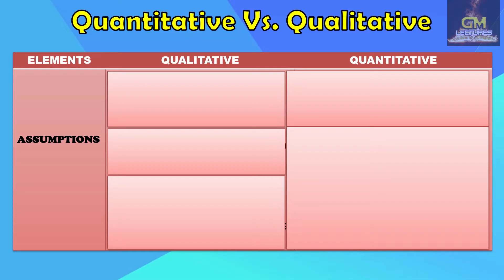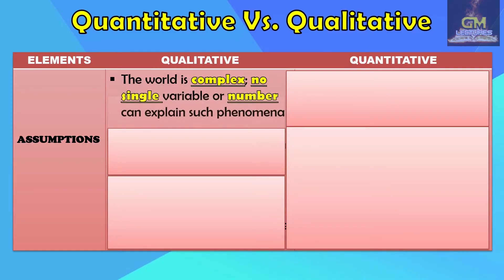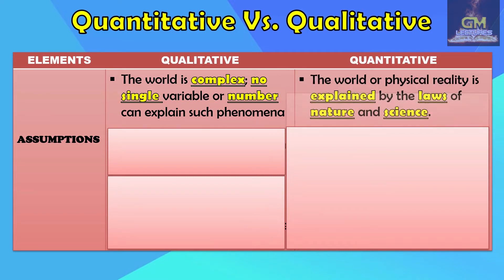To further discuss the differences between qualitative and quantitative research, in terms of assumptions, qualitative research says that the world is complex and no single variable or number can explain such phenomena, while quantitative research says that the world or physical reality is explained by the laws of nature and science.